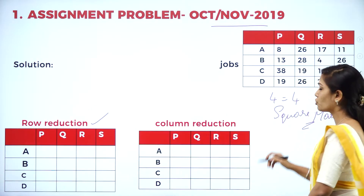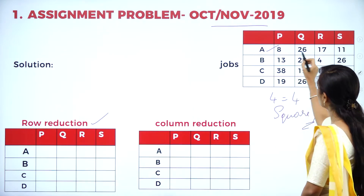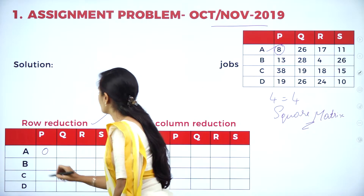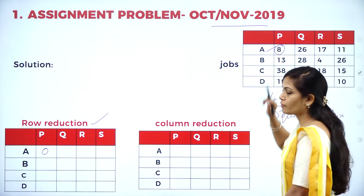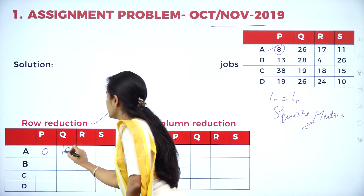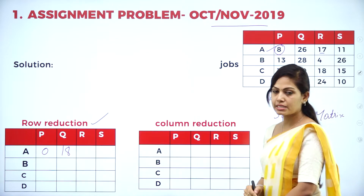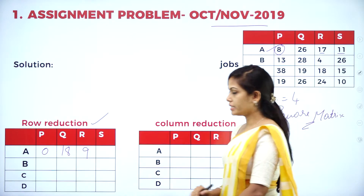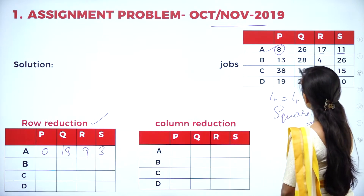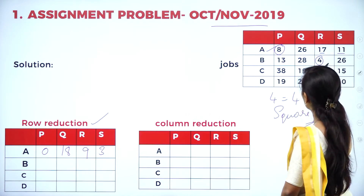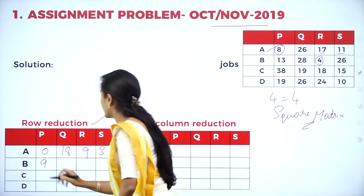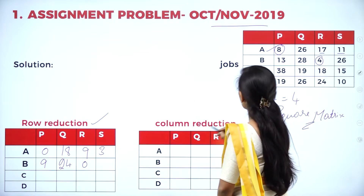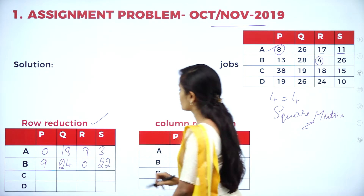Row reduction means: take the first row and find the least value, which is 8. So 8 minus 8 is 0; 26 minus 8 is 18; 17 minus 8 is 9; 11 minus 8 is 3. In the second row, the least value is 4. So 13 minus 4 is 9; 28 minus 4 is 24; 4 minus 4 is 0; 26 minus 4 is 22.